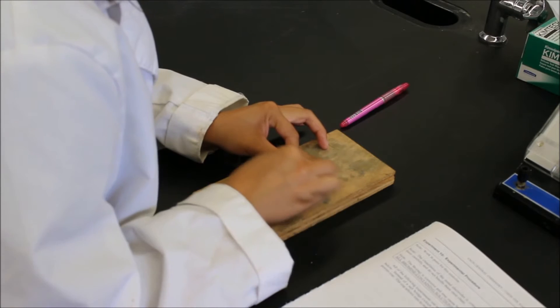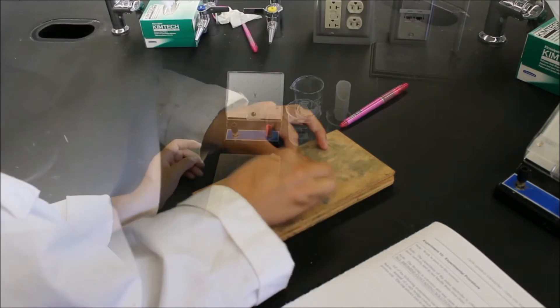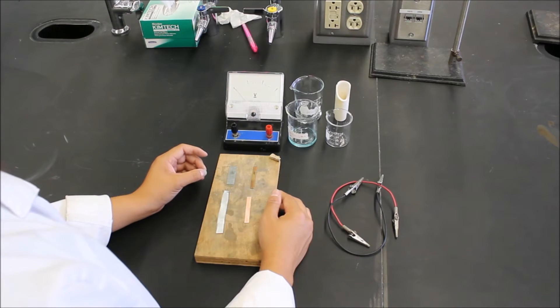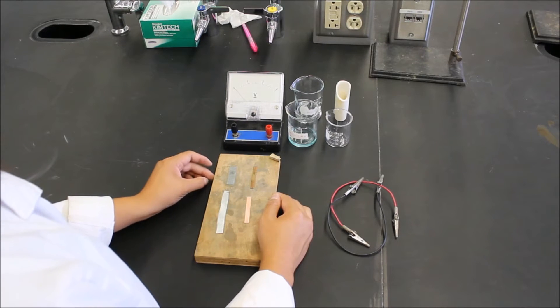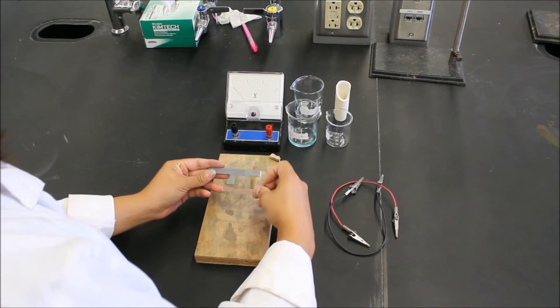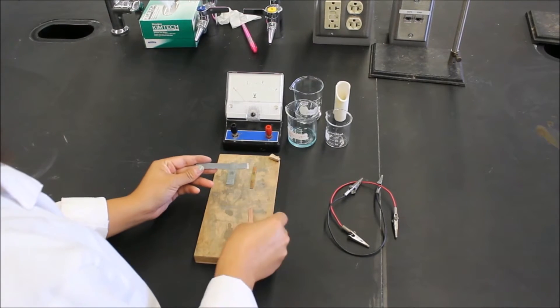But first off, we have to polish the electrodes. When you're polishing the electrodes, make sure that you don't spend too much time polishing these. You want them to look nice and shiny, like these polished electrodes from their original state.